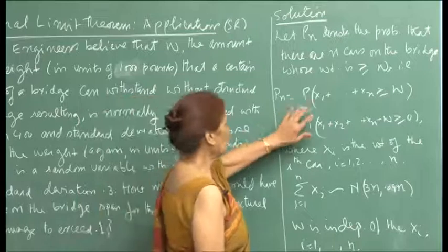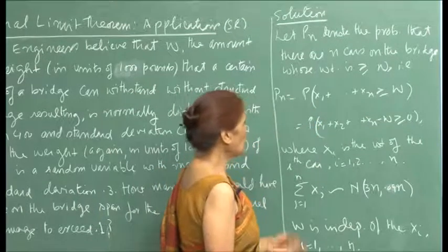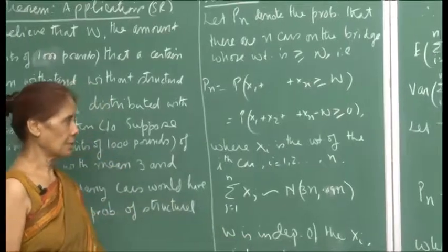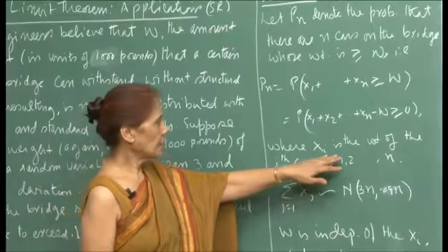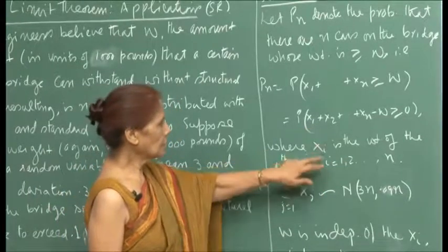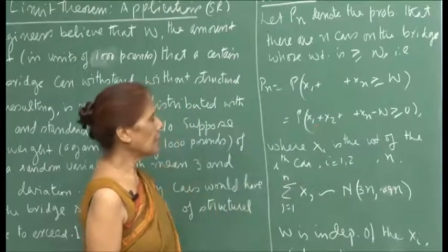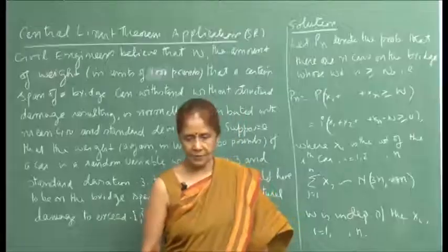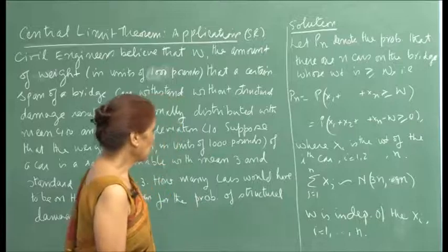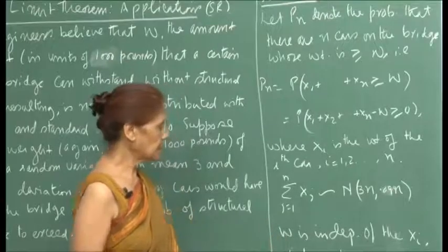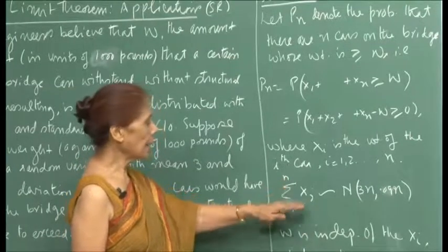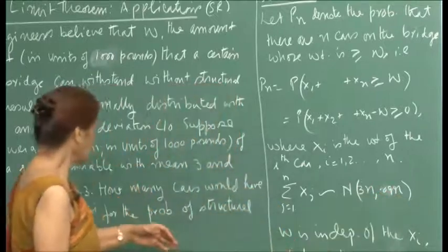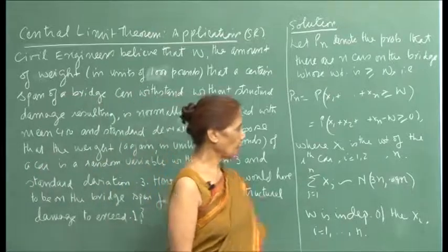This is the same as: p_n = probability that x_1 + x_2 + ... + x_n ≥ w, which can be rewritten as probability that x_1 + x_2 + ... + x_n - w ≥ 0. Here x_i is the weight of the i-th car, so the sum is the total weight of the n cars on the bridge. By the central limit theorem, for large n with identically and independently distributed random variables — since the weight of each car is independent — the sum Σx_j (j from 1 to n) is approximately normal with mean 3n and variance 0.09n.